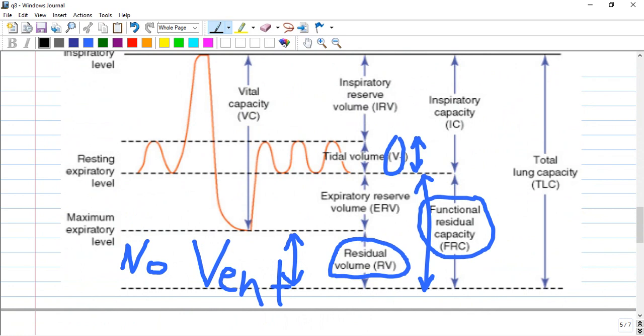So it is total lung capacity by inspiring additionally and deeply - it is inspiratory reserve volume. Tidal volume is normal breeze without effort.